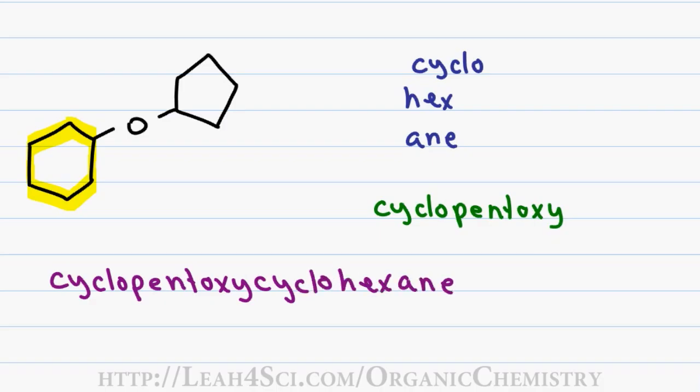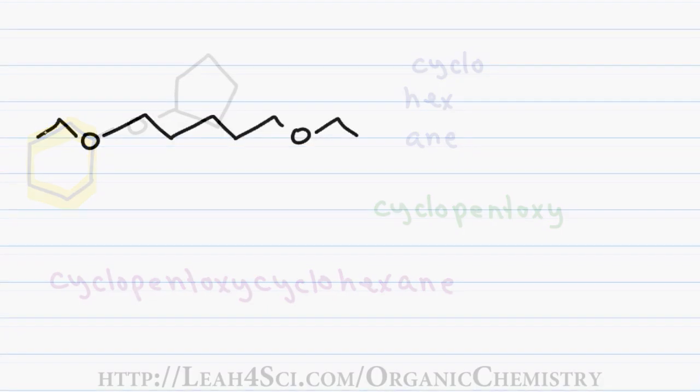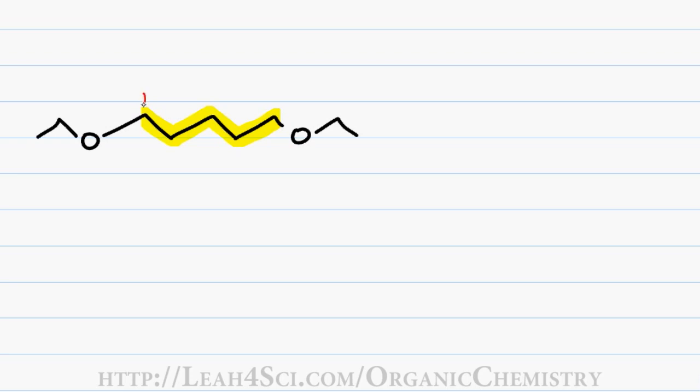When you have more than 1 ether on a molecule, you name it the same way. Include a number for the carbon holding each ether and include the word di to show that you have 2. I start by identifying and highlighting my parent chain. I have a total of 5 carbons on a symmetrical molecule allowing me to number from either direction. 5 carbons gives me a first name of pent, only single bonds gives me a last name of ane.